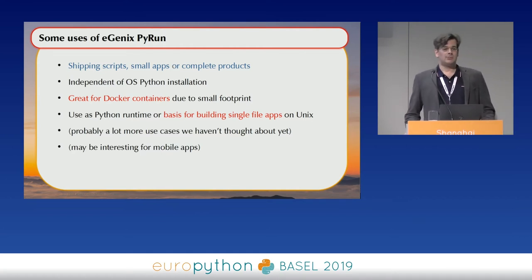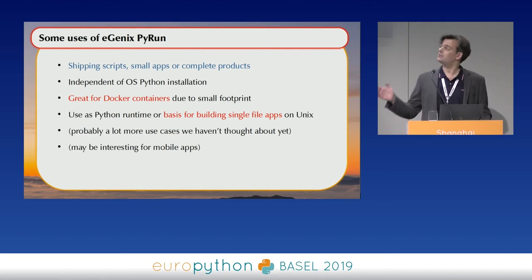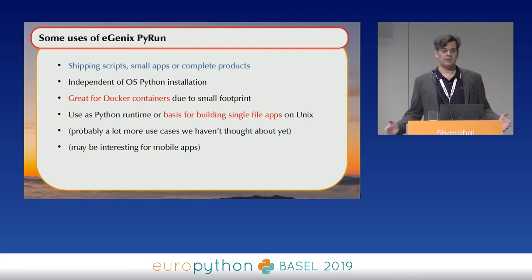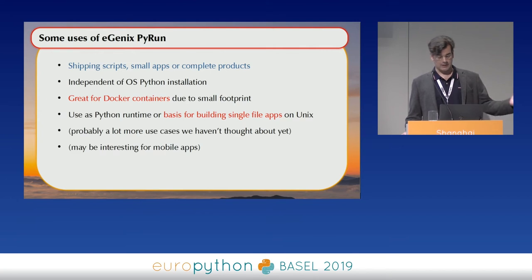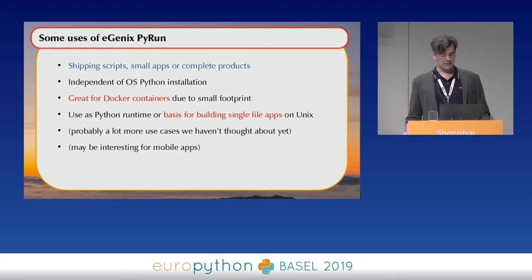These are some use cases for PyRun. The ones we really care about: being independent of the OS Python installation — that's the most important one. We want something small to easily ship to clients, and easily make it available as a download without too much bandwidth use. It's extremely good for Docker containers because it's so small — you can easily put it into a container image and the loading of the image is very fast, much faster than having a regular Python installation. And it's very easy to build single-app applications out of it.